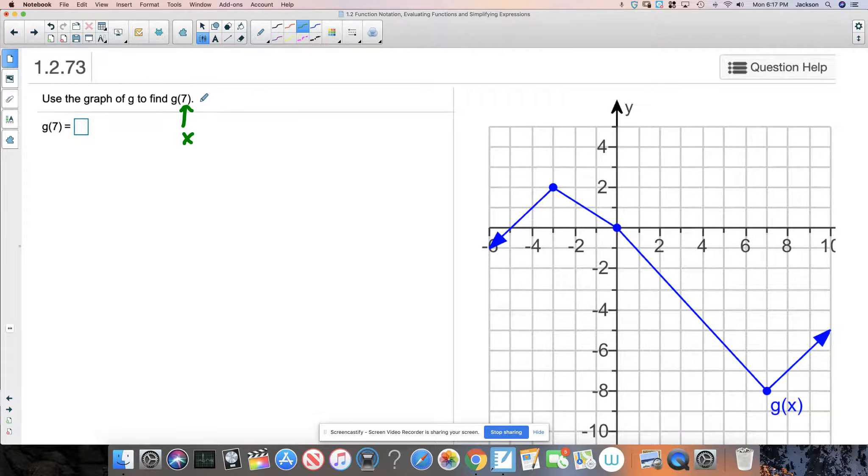So what they're saying is this has a value G of seven. And when X is seven, which is right here, there is a point that exists, which is down here. So this point has an X coordinate of seven. And you can see from here that it has a Y coordinate of negative eight.